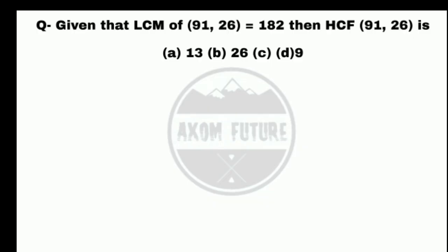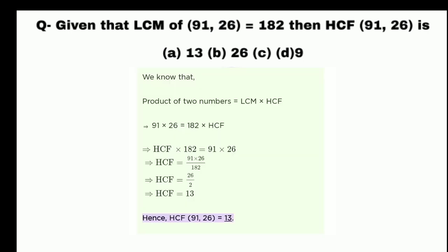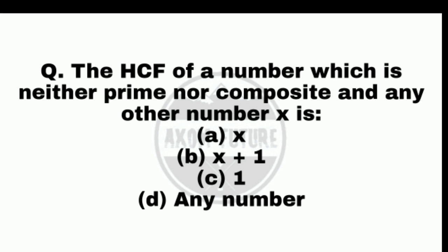Equation 1. Given that LCM of 9 and 126 equals 182, then HCF of 9 and 126 is answered. The HCF of a number which is neither prime nor composite and any other number is 1. The right answer is C, 1.